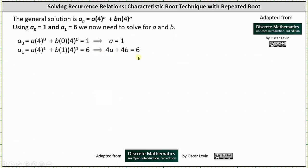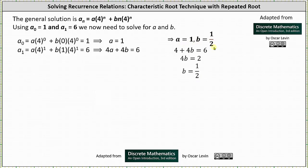This system is easy to solve because we already know a equals one. Substituting one for a in the second equation, we have four plus four b equals six. Solving for b, we get b equals one half. Now that we know a equals one and b equals one half, we can write the solution: a sub n equals four to the power of n plus one half times n times four to the power of n. This is the solution to the recurrence relation.